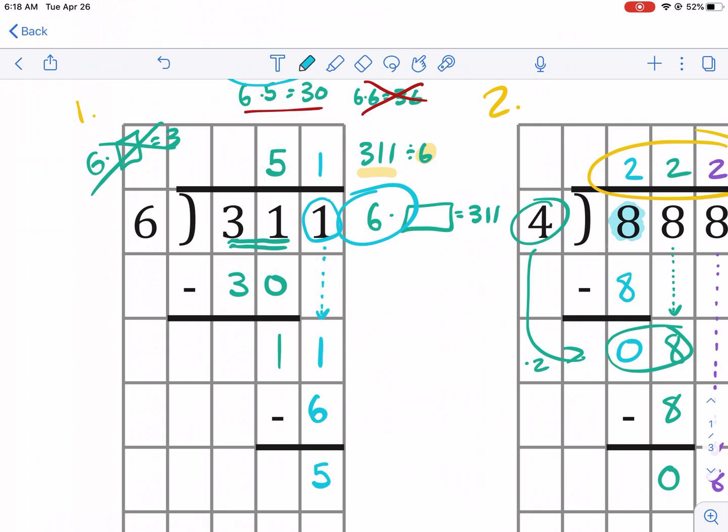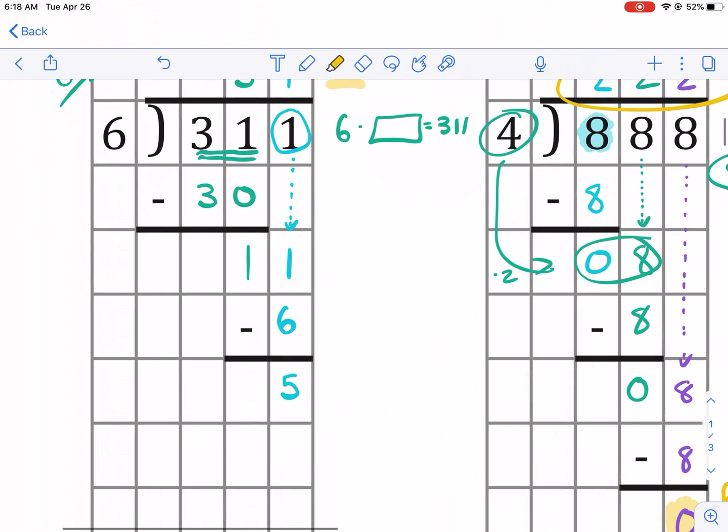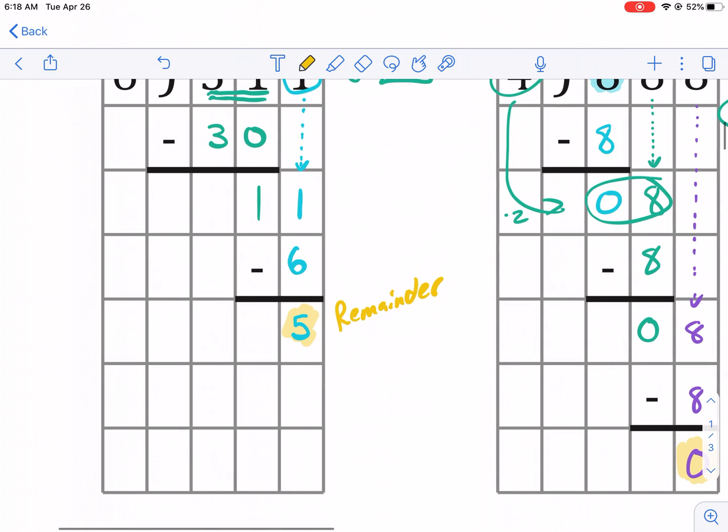And there's nothing else to drop down. So what does this guy become? This becomes our remainder. So this is our remainder. So for now, our answer would be expressed like this, it'd be 51 remainder five. That looks like a s. There we go. 51 remainder five. That's one way to write it.